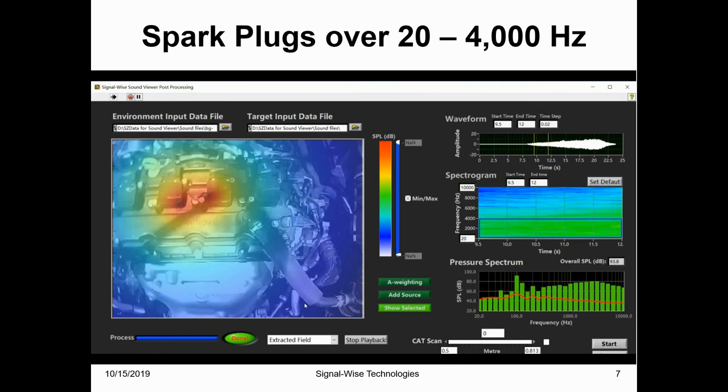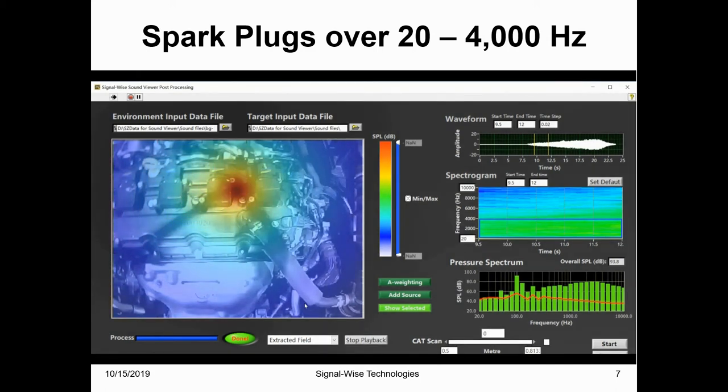Here is the sound pressure level distribution in the selected time-space frequency domain from 20 to 4000 Hz range. This enables us to see more clearly the engine spark plugs noise as we have not only zoomed in space but also narrowed the frequency range.